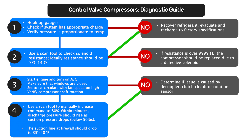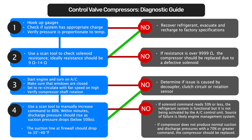Discharge pressure should rise as suction pressure drops within minutes. The suction line at the firewall should drop to 35 to 40 degrees Fahrenheit. If the solenoid command reads 50 percent or less, you can assume the refrigerant system is functional but not being activated by the ECU. The cause of AC failure is likely an engine management component.